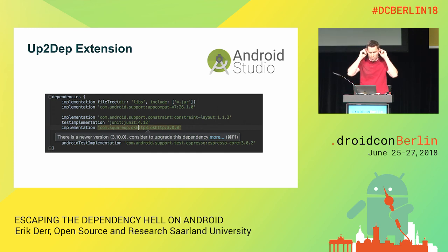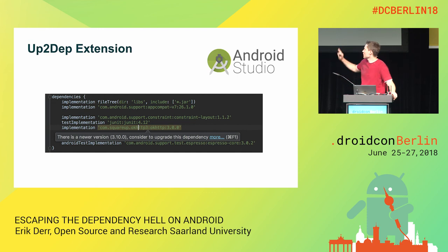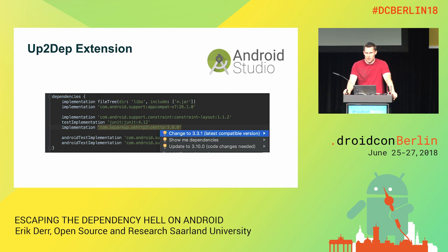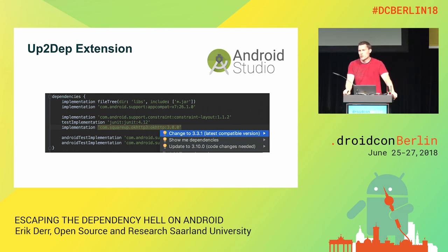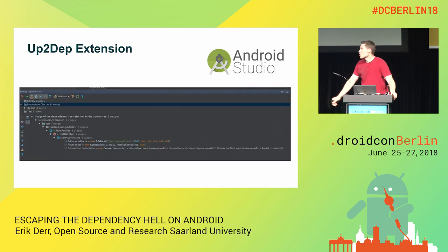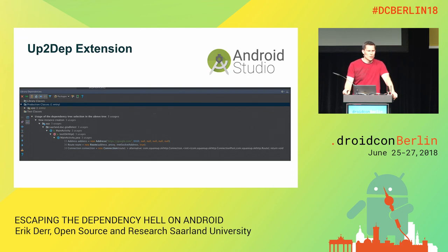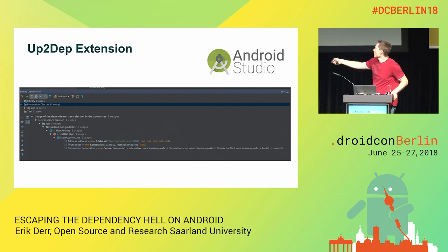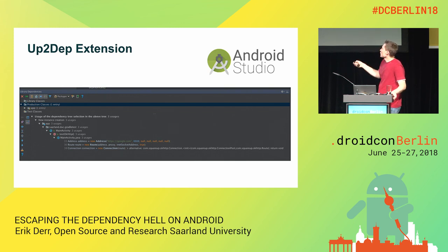To give a short glimpse of how it looks: similar to what Lint does now, it scans for an outdated library and says the latest version is 3.10. We can do more: we can say version 3.3.1 is the latest compatible version, so you shouldn't experience any problems. But if you want to go for the latest version and click 'show dependencies,' it scans the code for API invocations to that library and tells you which APIs are no longer available in the newest version, and even suggests likely replacement APIs.